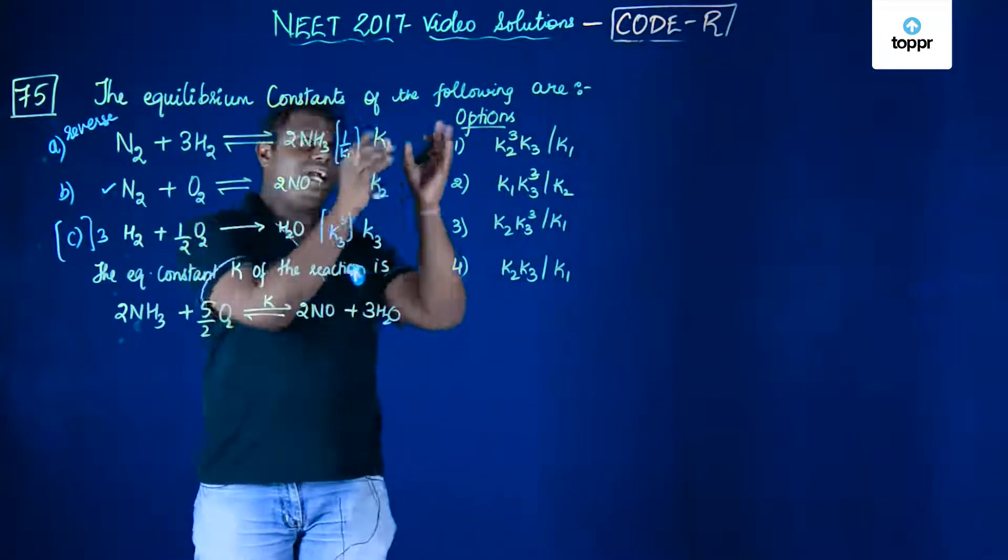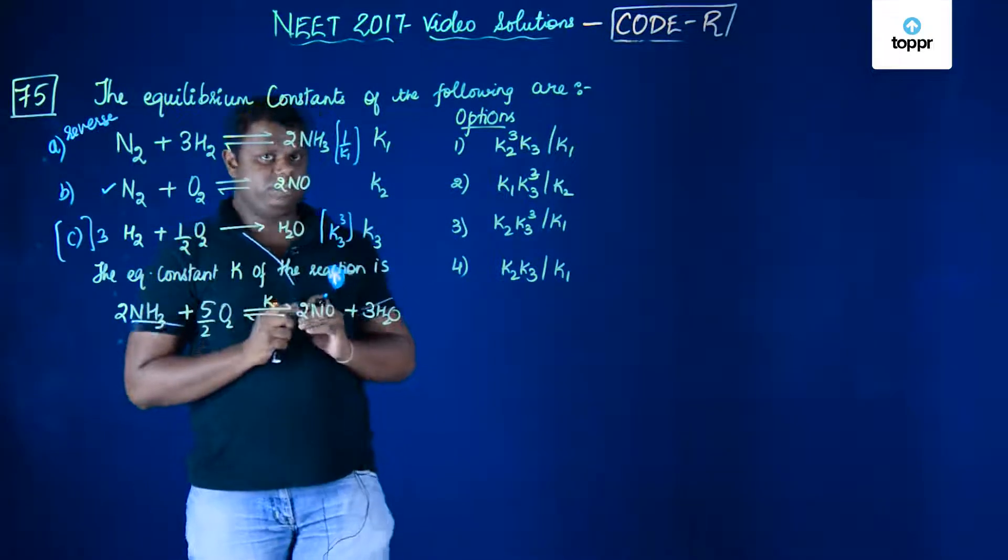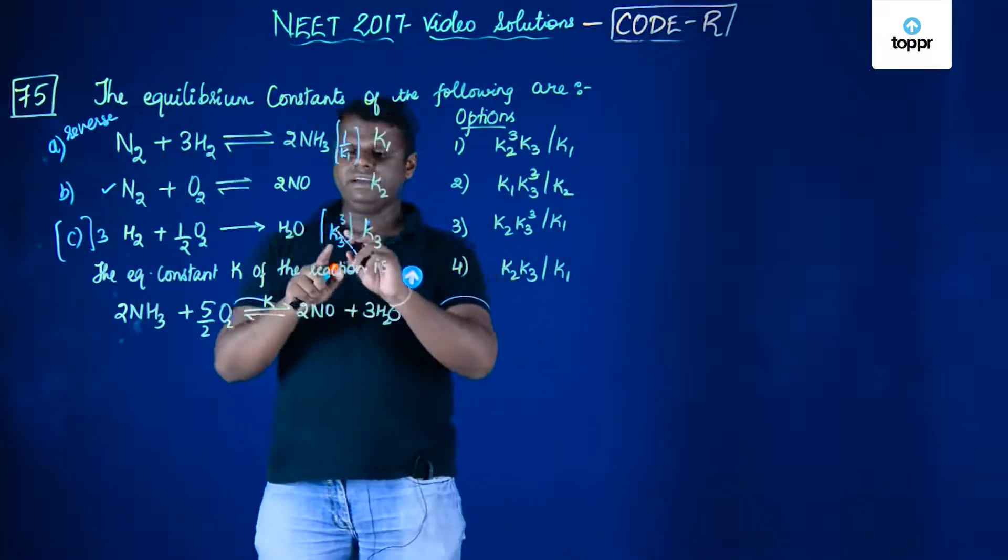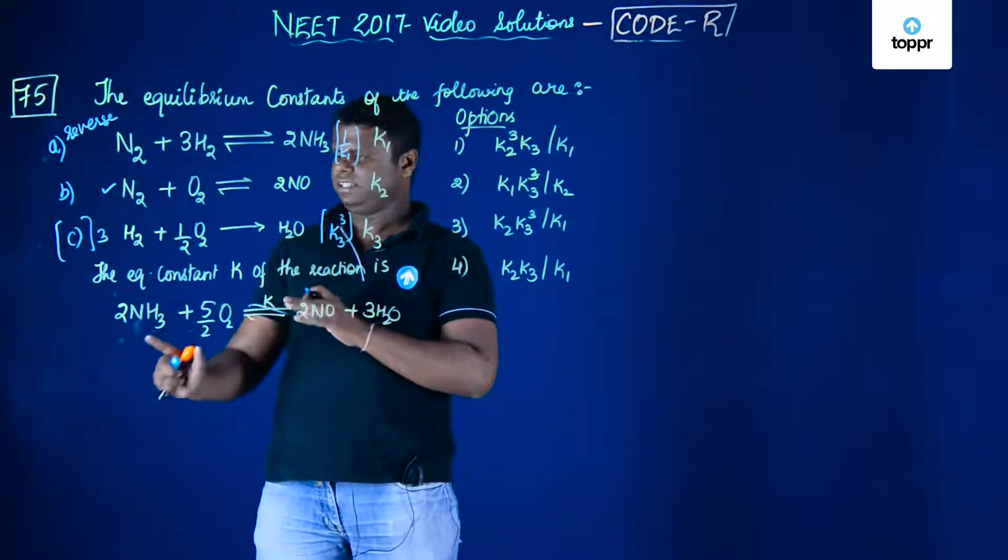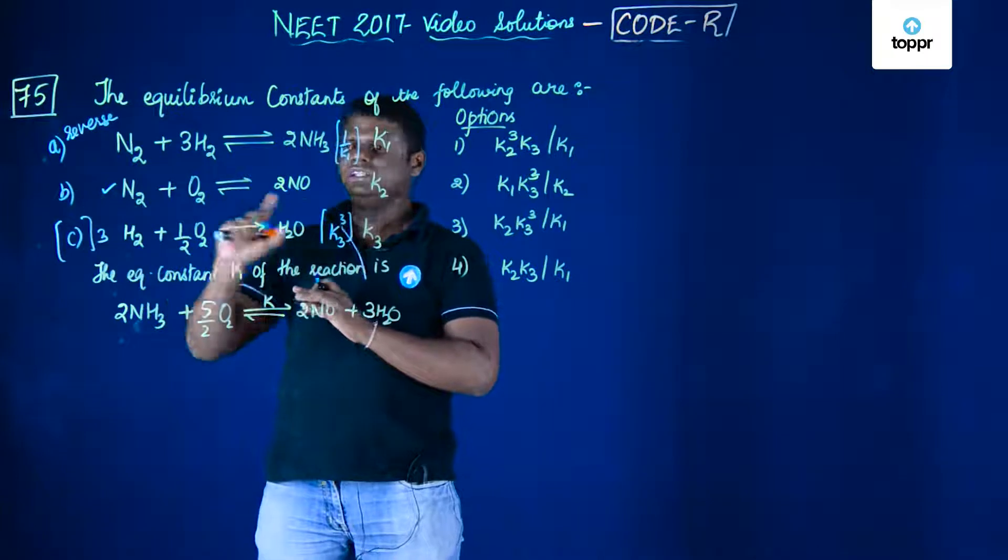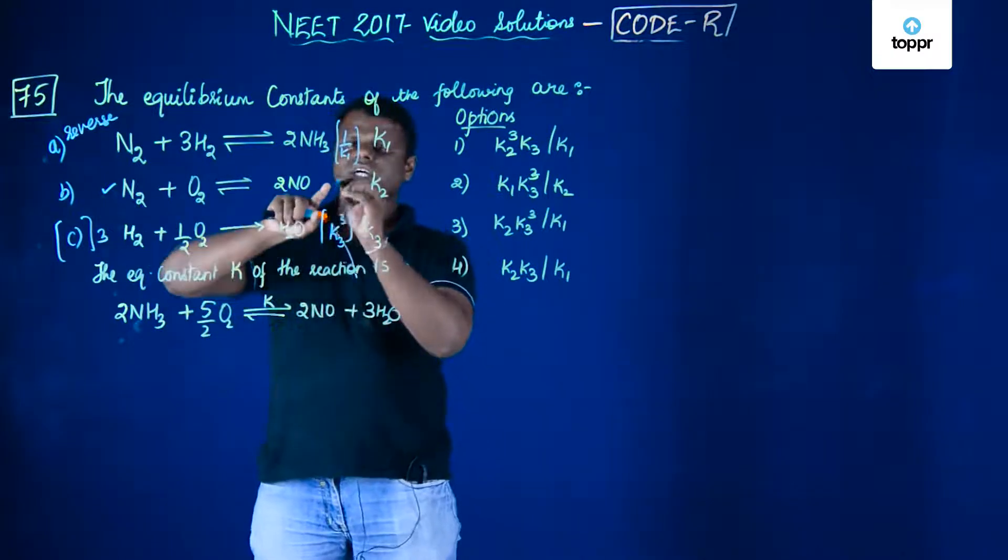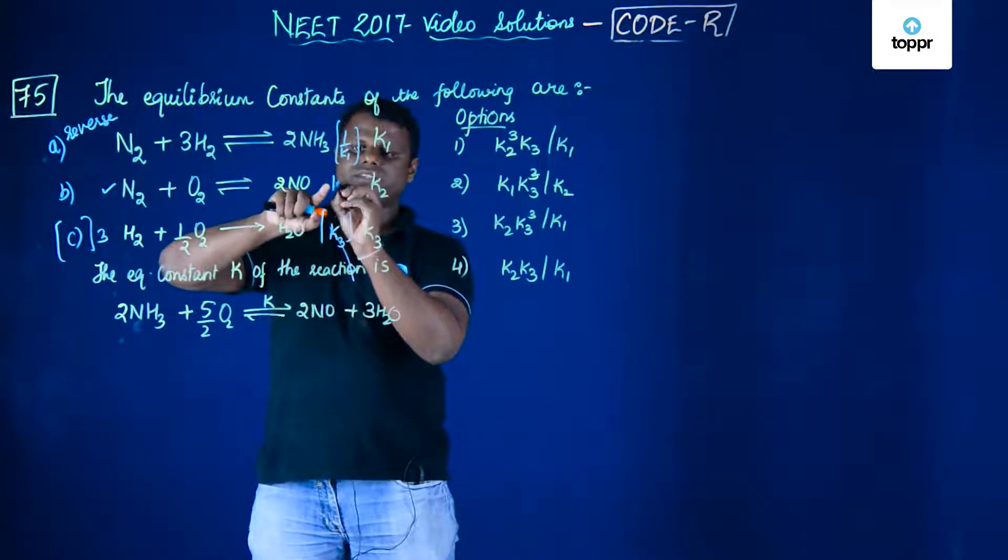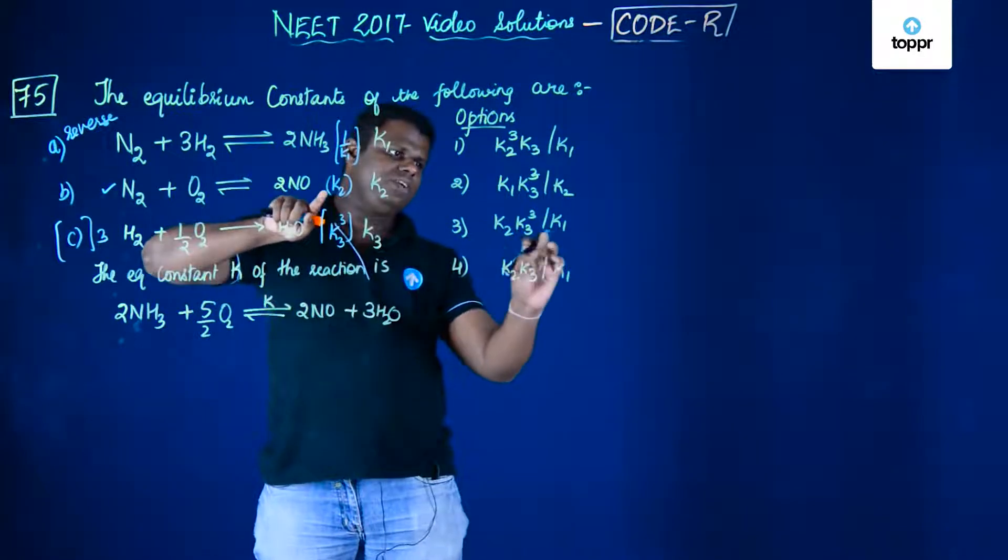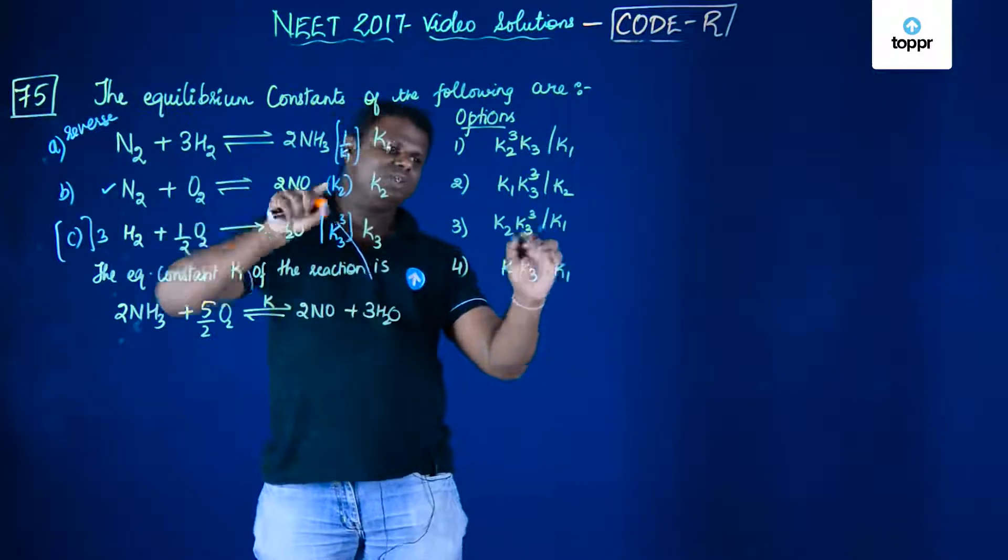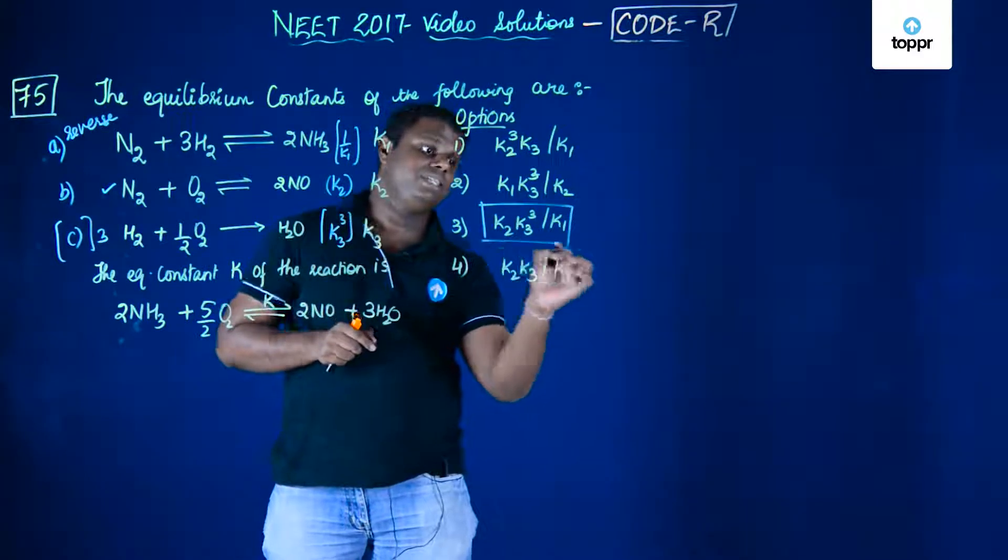That means you should search for that alternative that has k1 in the denominator and k3 cube in the numerator, and k2 is as it is because equation B is as it is. So you have k2, k3 cube by k1. This is the answer by the method which I told you.